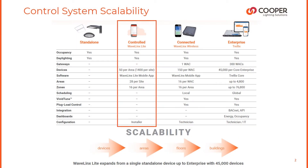So where does Wavelinks Light fit into our connected lighting systems? In terms of scalability, Wavelinks Light is the next step from a simple standalone solution that eventually expands to full Trellix enterprise solutions with 45,000 devices.